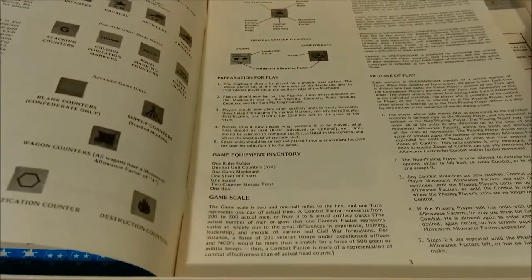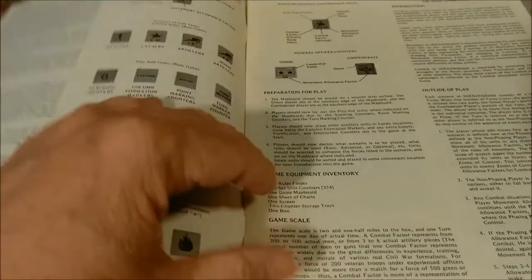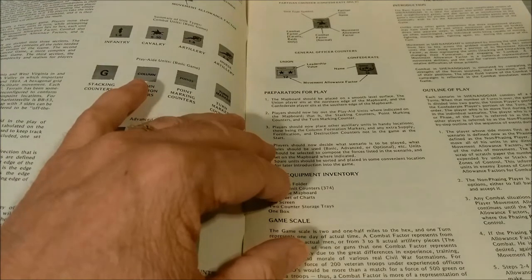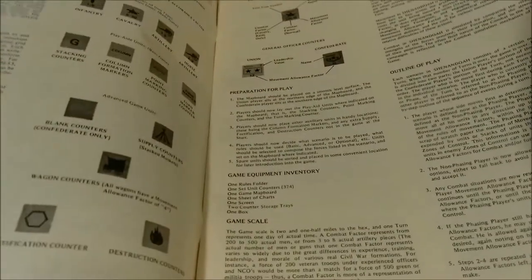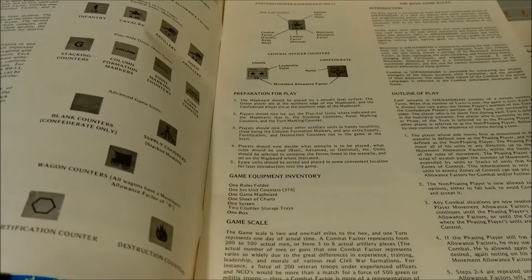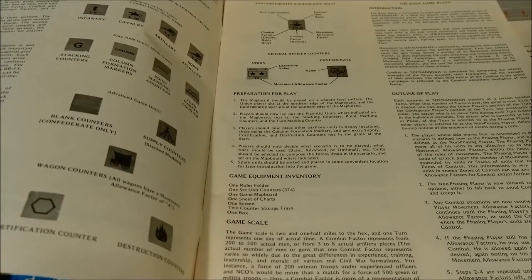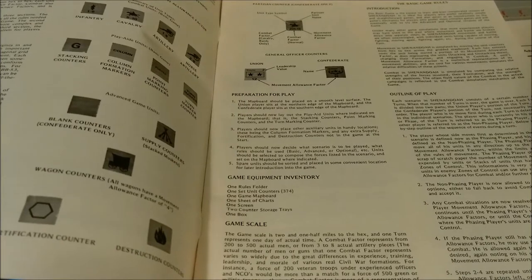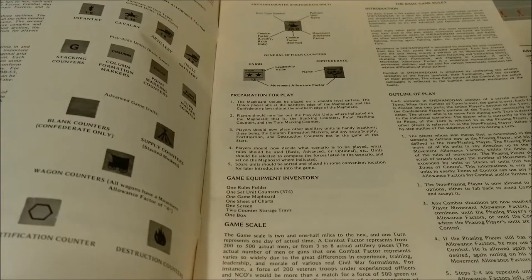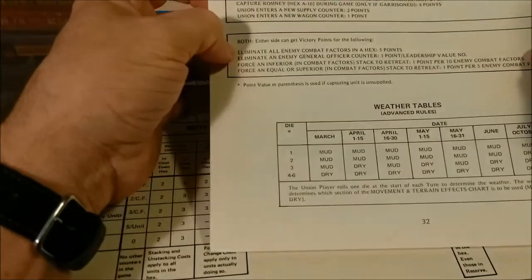Let's look at the sequence of play real quick. Each scenario in Shenandoah consists of a certain number of turns. The player whose side moves first is determined in the individual scenario — that's the phasing player; his opponent is the non-phasing player. The phasing player should note on a scrap of scratch paper the number of movement allowance factors expended by units or stacks. I'll have to dig around to see if there's a better sequence of play — there might be one on the player aid card.